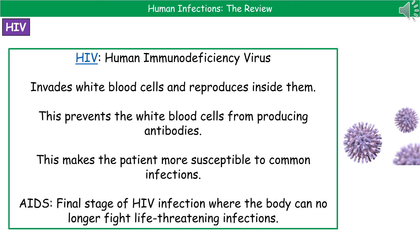Looking at HIV in more detail: HIV stands for human immunodeficiency virus. Upon infection, it invades white blood cells and reproduces inside them. This causes two problems: first, it destroys white blood cells as the virus particles burst those cells; and second, it prevents white blood cells from producing antibodies. Because your immune system is being weakened, you become more susceptible to common infections that your immune system would ordinarily fight off. AIDS is the final stage of HIV infection — it occurs when your body can no longer fight off life-threatening infections, and it represents the end stage of the disease.